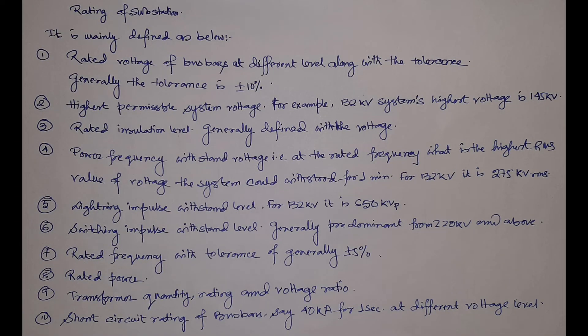Now we will check how the rating of a substation is defined. The first criteria is the rated voltage of the bus bar at different levels. A substation can consist of different voltage levels, so you have to define the voltage levels of the bus bars along with the tolerance — generally plus or minus 10%. For example, for a 132 kV / 33 kV substation, the defined voltage at the 132 kV level will be 132 kV ±10%, and at the 33 kV level it will be 33 kV ±10%.